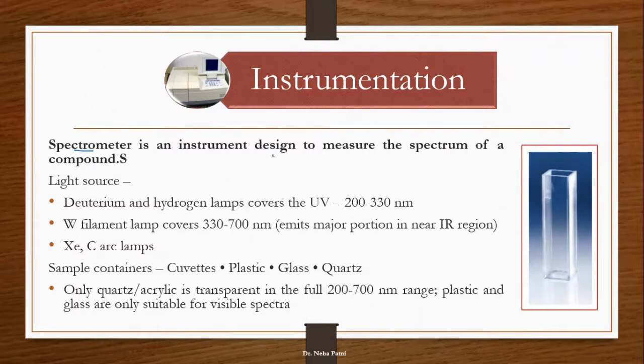Basically, a spectrophotometer is that instrument which is used to measure the spectrum of the compound. If we want to know the ultraviolet spectrum of a compound, the instrument we are going to use would be a spectrometer or spectrophotometer. This is the name of the apparatus we are going to use.